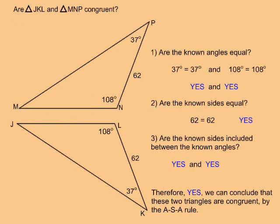In this example, are triangle JKL and triangle MNP congruent? Question 1: are the known angles equal? Both triangles have a 37 degree angle and both triangles have a 108 degree angle, so yes, the known angles are equal. Question 2: are the known sides equal? Both triangles have a 62 unit side — yes, the known sides are equal. Question 3: are the known sides included between the known angles? In both cases, yes, the 62 unit side is located between the 37 degree and 108 degree angles. Therefore, we can conclude that these two triangles are congruent by the ASA rule.